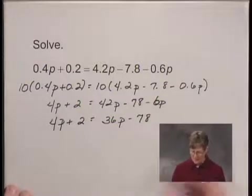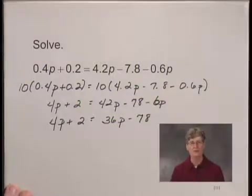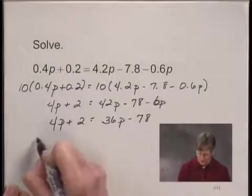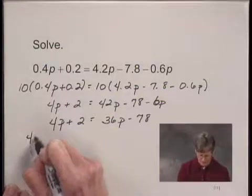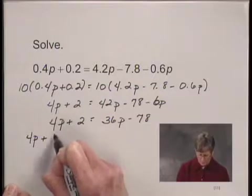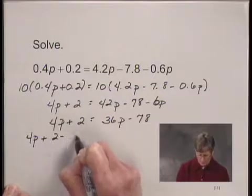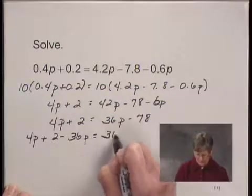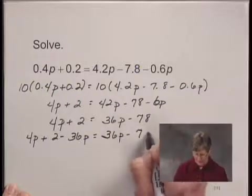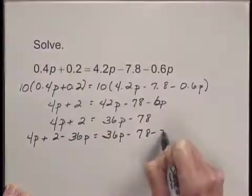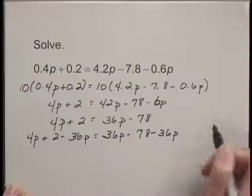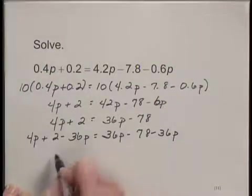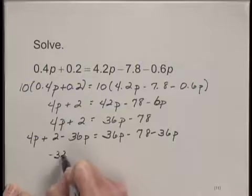I see that if I subtract 36p on both sides of this equation, I will eliminate the p term on the right hand side. So we'll subtract 36p on both sides. 4p plus 2 minus 36p equals 36p minus 78 minus 36p. Now on the left hand side, 4p minus 36p gives me negative 32 times p.